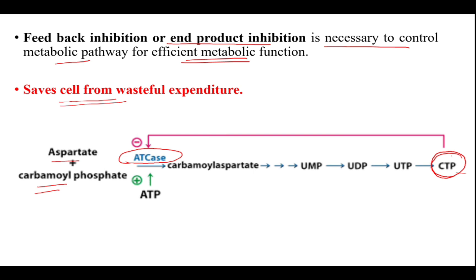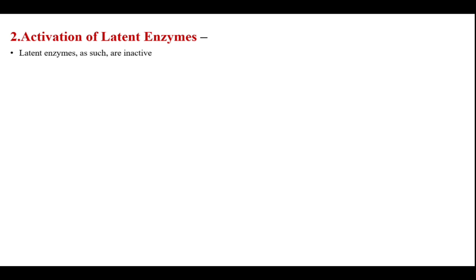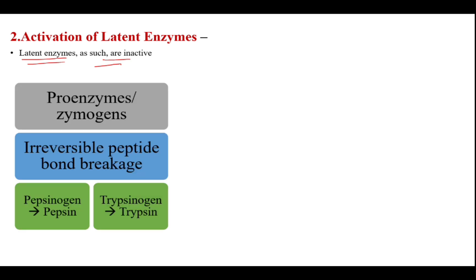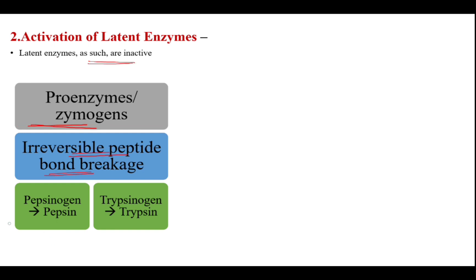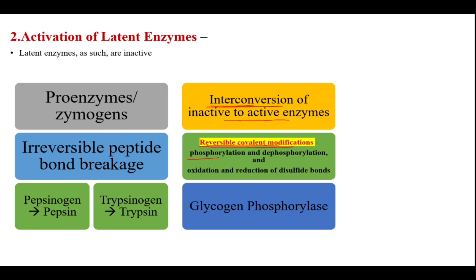Next is the activation of latent enzymes, another type of regulation of enzyme activity. Latent enzymes are inactive as such and have to be activated for any particular reaction to occur. One example is proenzymes, also called zymogens — they are present in an inactive state and become activated by irreversible peptide bond breakage. For example, pepsinogen to pepsin, or trypsinogen to trypsin.